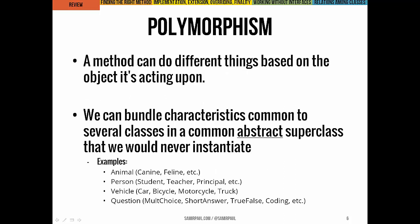Coming back to the idea of polymorphism: a method can do different things based on the object it's acting on. Even if you call the same method, it can behave differently because it takes many different shapes based on the different class it's defined in. This is a feature we often use when working with abstract superclasses.